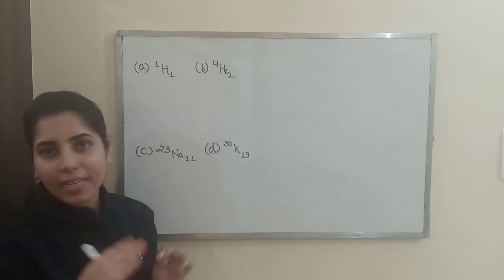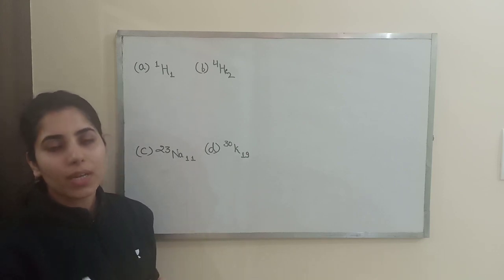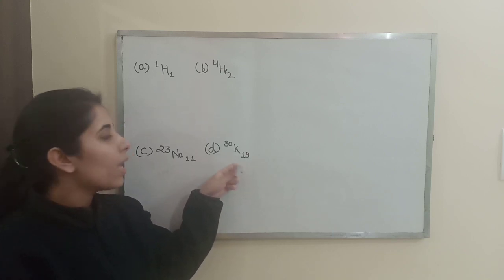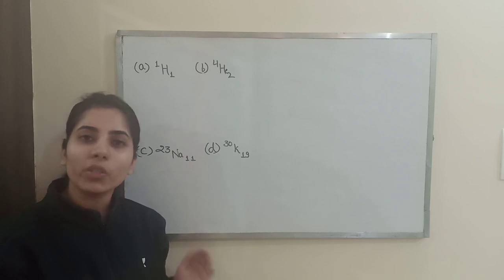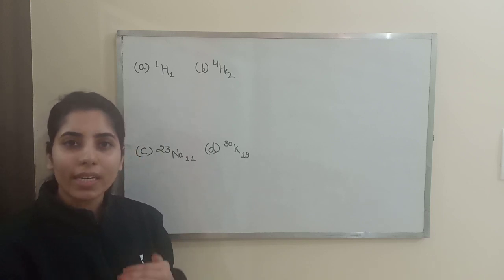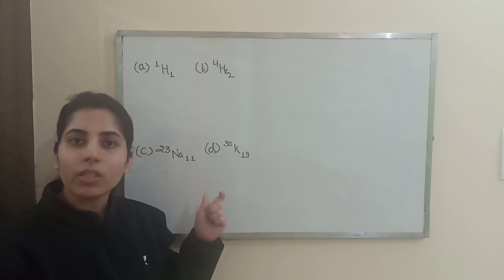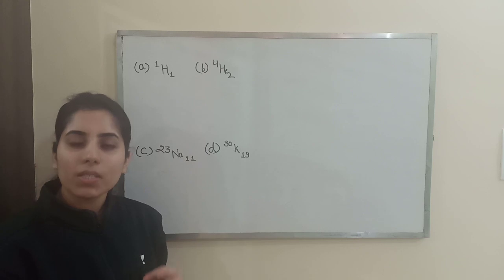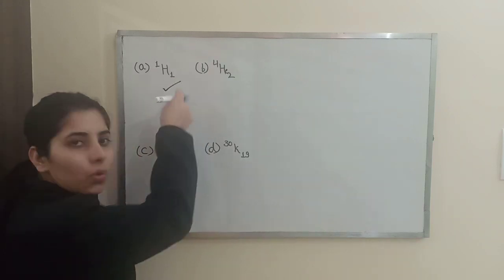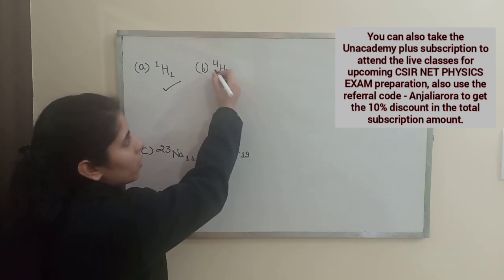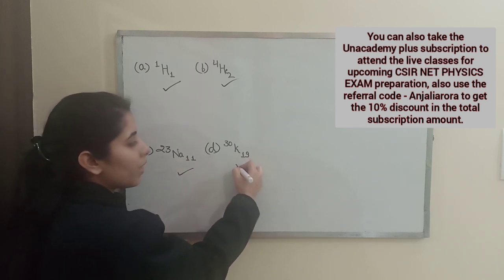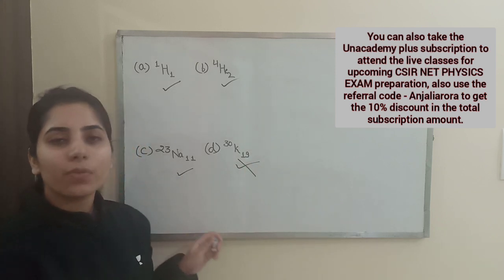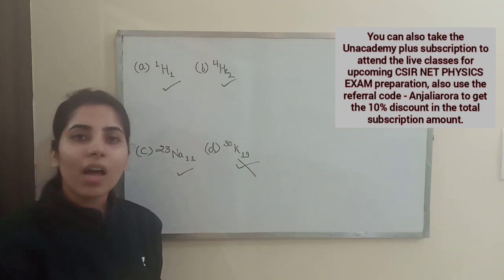For sodium, we have 23 plus 11 which gives 34 — again even, so sodium will also exhibit Bose-Einstein condensation. For the last element, 30 plus 19 gives an odd value. So the rule is: simply add the number of electrons, protons, and neutrons together — if the result is even, that element will exhibit Bose-Einstein condensation. If it is odd, like 49, it will not.